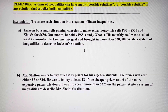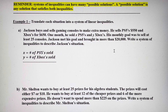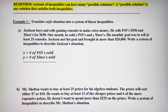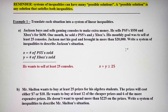The first thing we want to do is define our variables. x is equal to the number of PS5s sold, and y is the number of Xboxes sold. Once we define the variables, it becomes a lot easier to write out our system. One key thing that comes up is he wants to sell at least 25 consoles. So x plus y would have to be greater than or equal to 25. That's going to be the first inequality in my system.